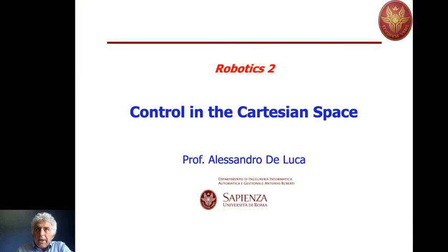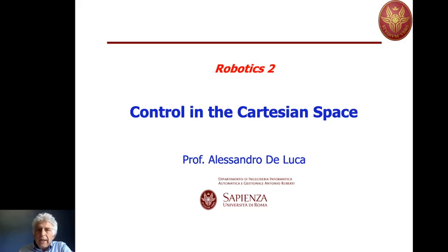Welcome to this Robotics 2 lecture. Today we will consider the problem of controlling robot motion when the motion is driven by the error defined in the Cartesian space, namely at the end-effector level. So far we have seen control laws for regulation and trajectory tracking in free space where the error driving the feedback action was mainly defined at the joint level. Now with this extension we will get closer to the point of interest, namely the end-effector level.